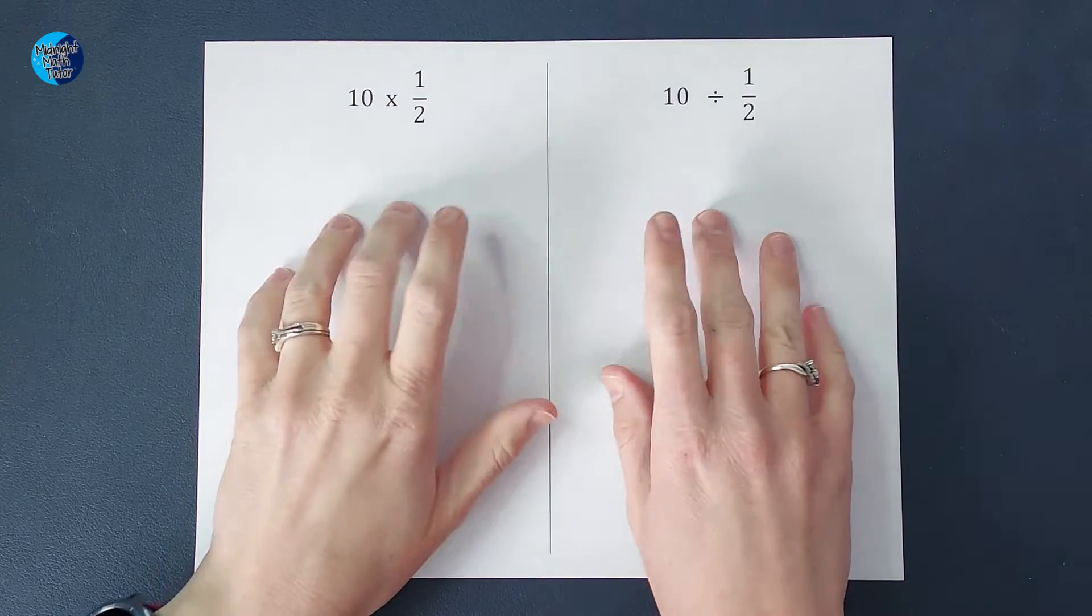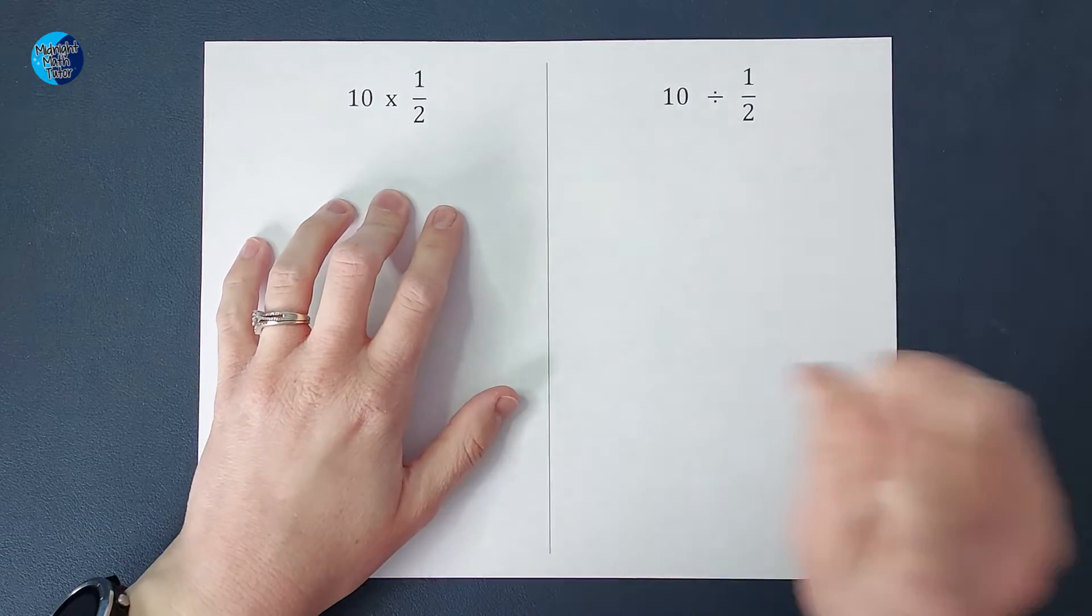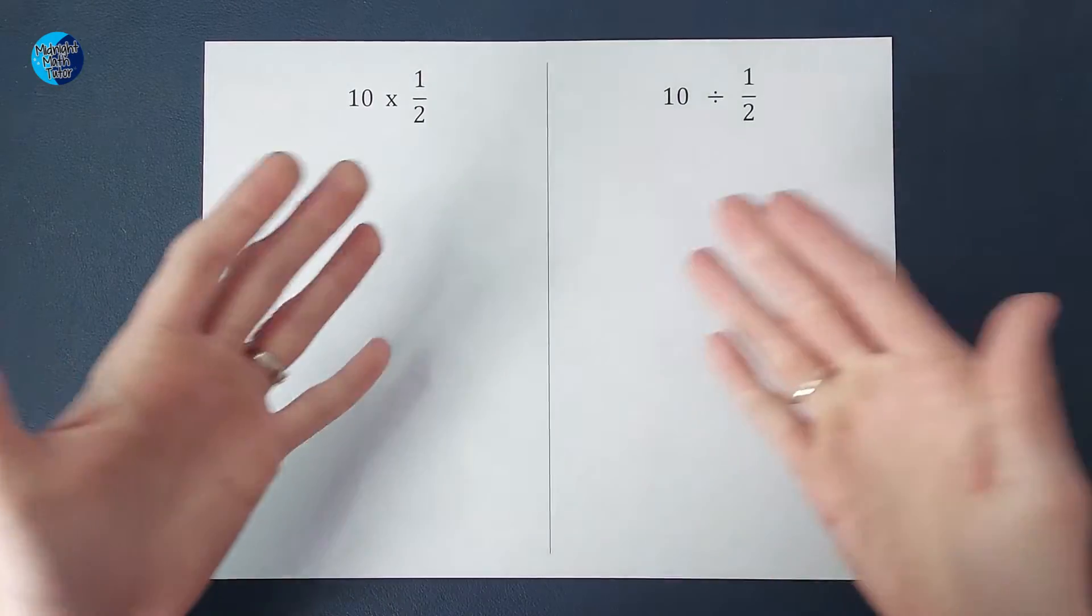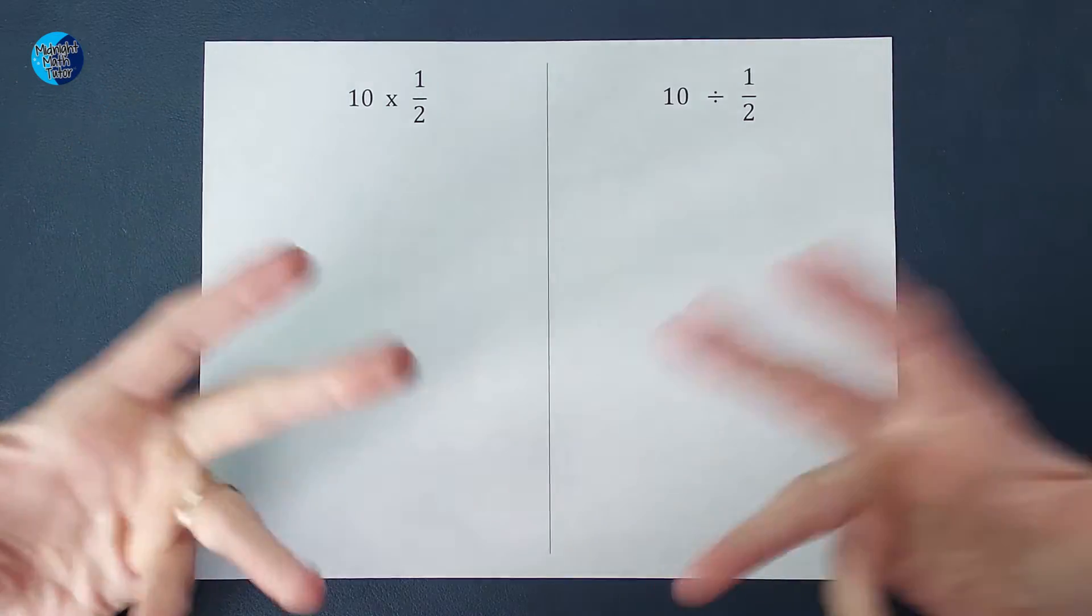Hey guys, I've got two problems here. One of these is asking me what is half of 10 and one of them is not. So which one is asking me that and if one of them is not asking me that, what is it asking me?